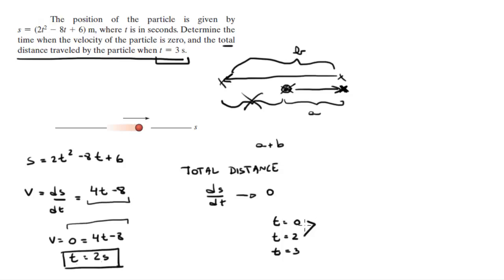So what's the distance traveled from 0 to 2 seconds? Well, when t = 0, s = 6. How about 2 seconds? When t = 2, s = -2. And at 3, s = 0.